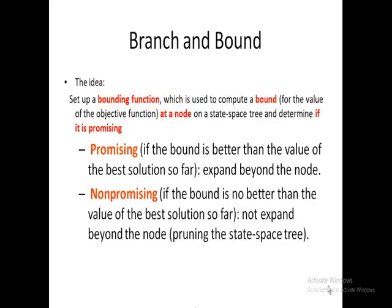The main idea of Branch and Bound is to set up a bounding function which is used to compute a bound for the value of the objective function at a node on the state space tree, and determine if it is promising. Promising means if the bound is better than the value of the best solution so far — expand beyond that node. Non-promising means if the bound is no better than the best solution so far — do not expand beyond that node.